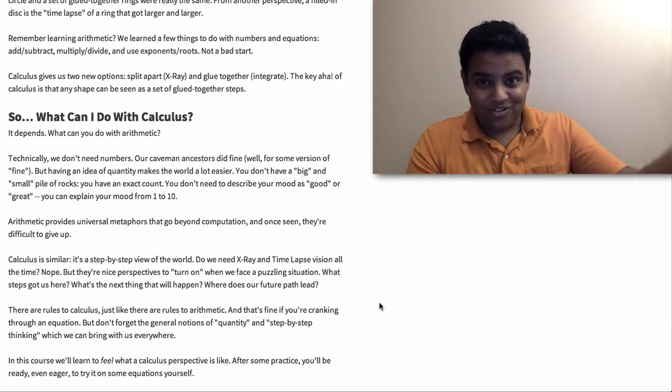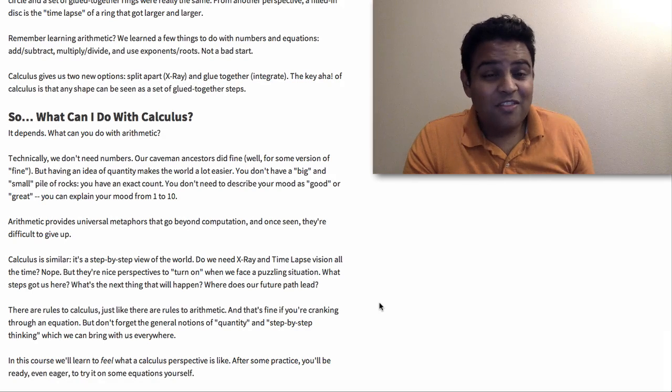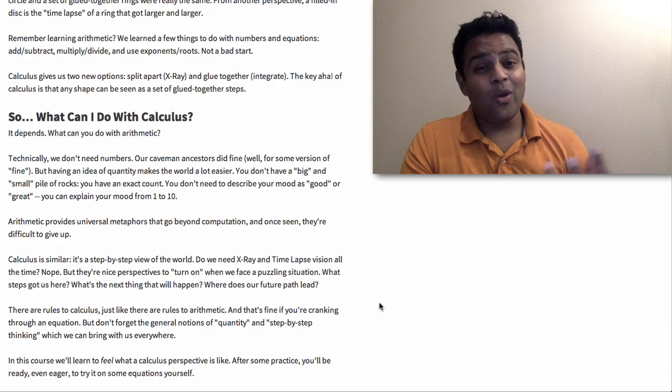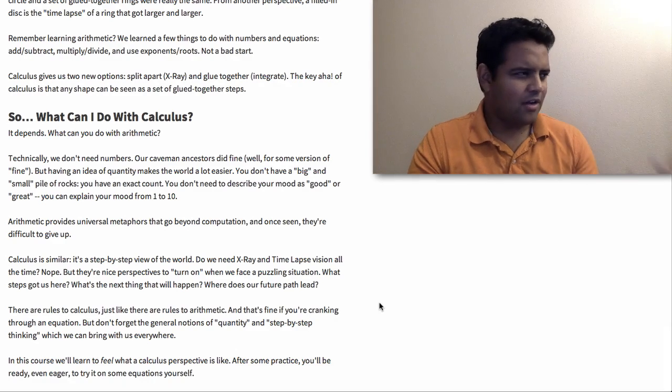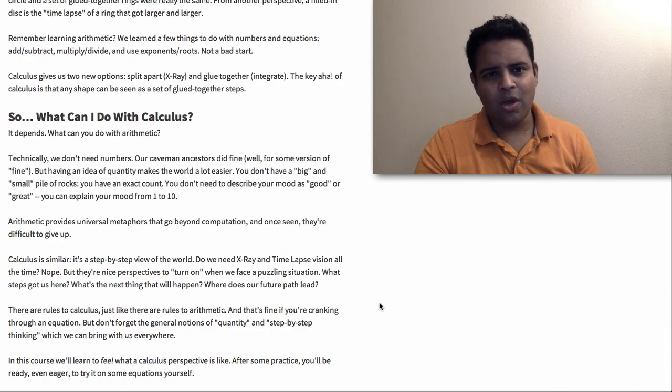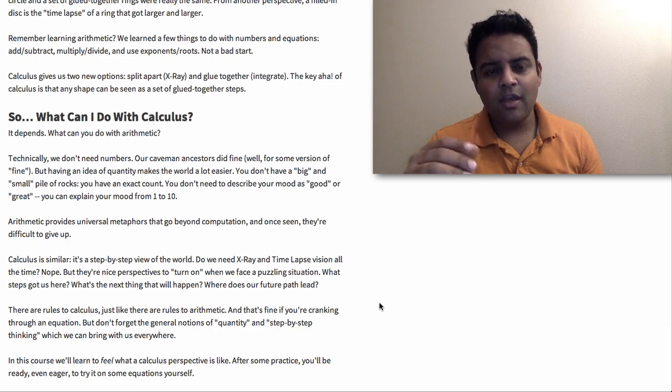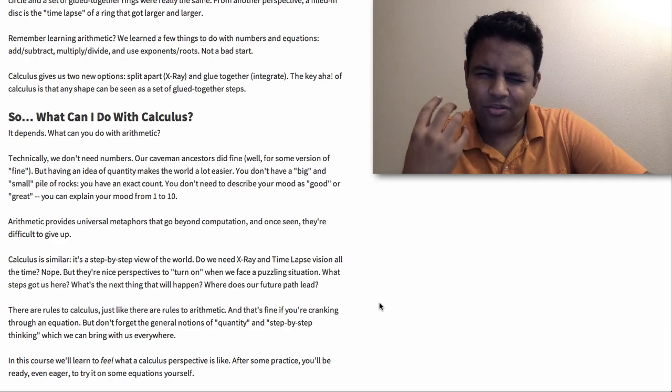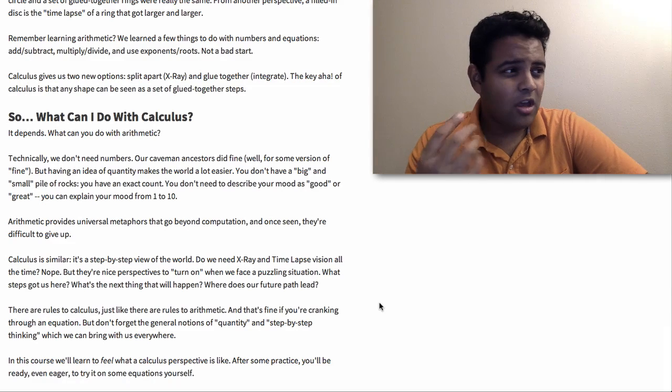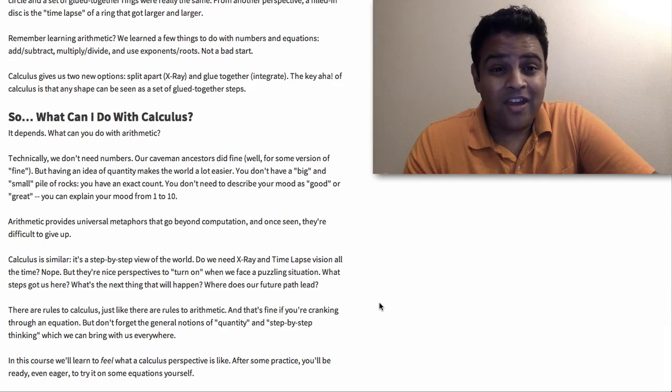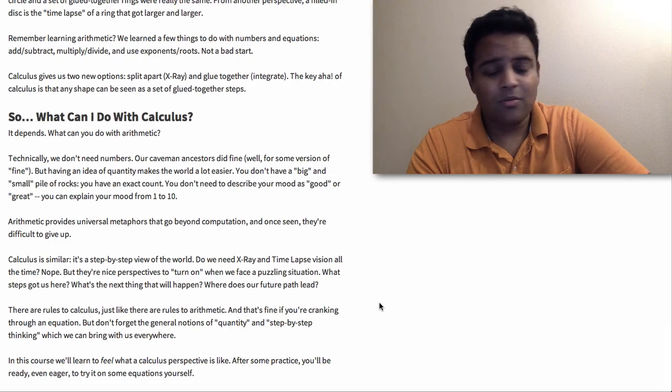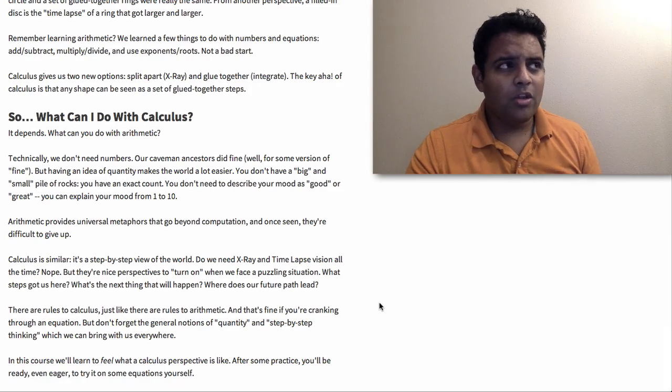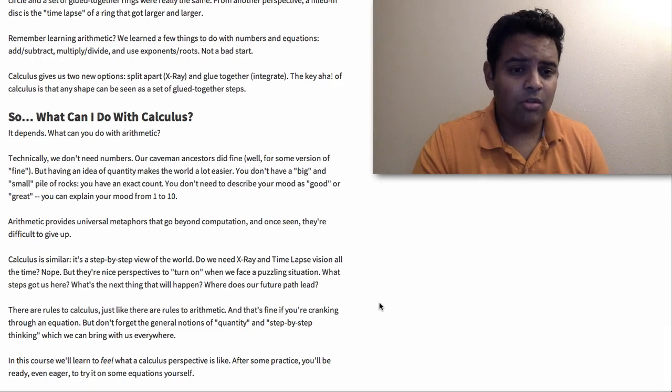They didn't live too long, but they didn't really need numbers, right? Numbers are sort of a way of thinking of quantifying things. You don't have two piles of rocks. You don't have a big and a small pile. You have a pile of 10 and a pile of 50, and you can work out some facts with that. And once you have this idea of numbers, it's really hard to give up because we kind of quantify everything. How are you feeling? One to 10. Your job satisfaction, one to 10 surveys, we sort of implicitly want to quantify things because it's so useful.